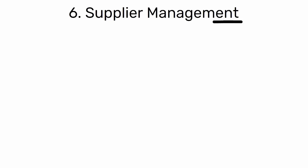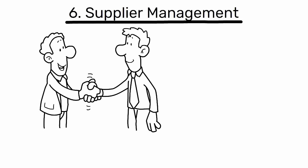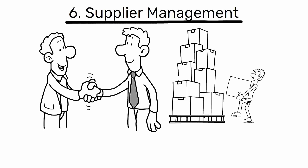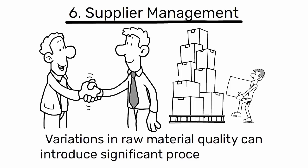6. Supplier management: work closely with suppliers to ensure the quality and consistency of raw materials. Variations in raw material quality can introduce significant process variation.